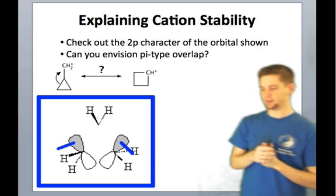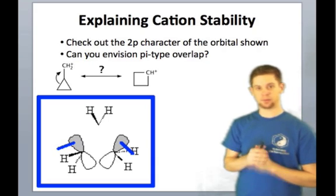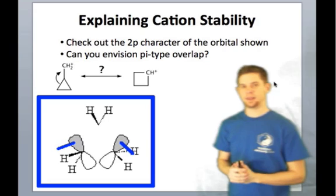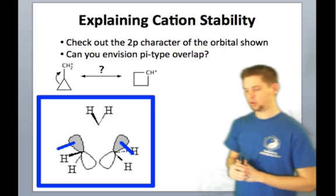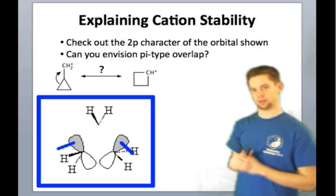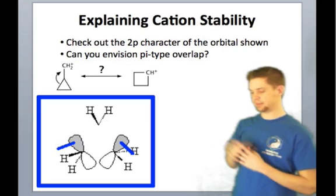All right, so to explain the stability of the cyclopropylmethylcation in terms of this resonance picture here, to make that jive with molecular orbitals, we need only zoom in on that orbital that I showed on the last slide. So here you're seeing that orbital,